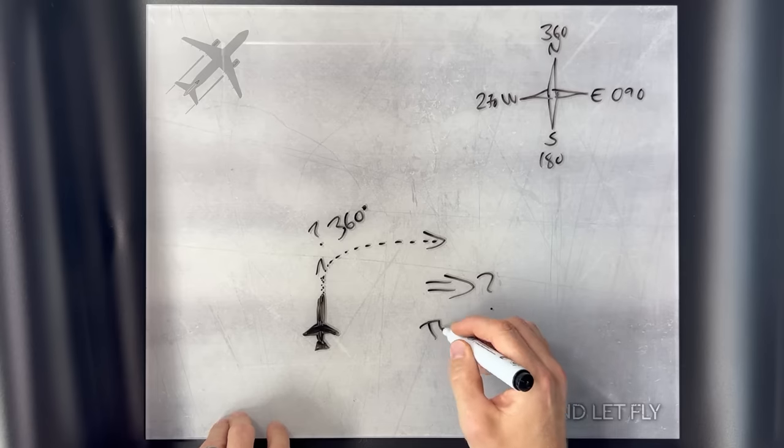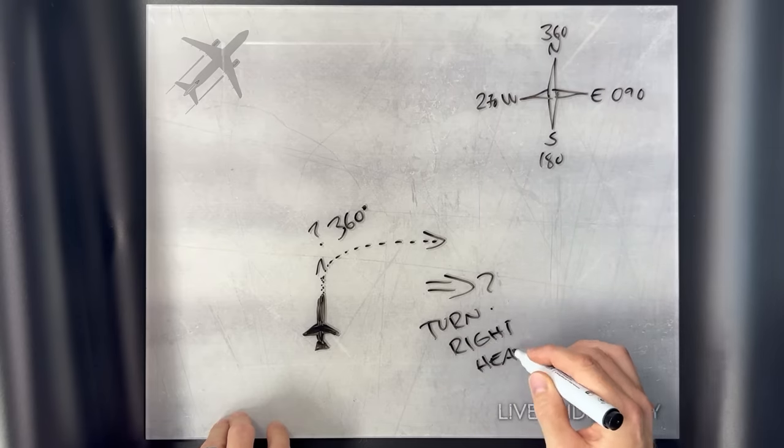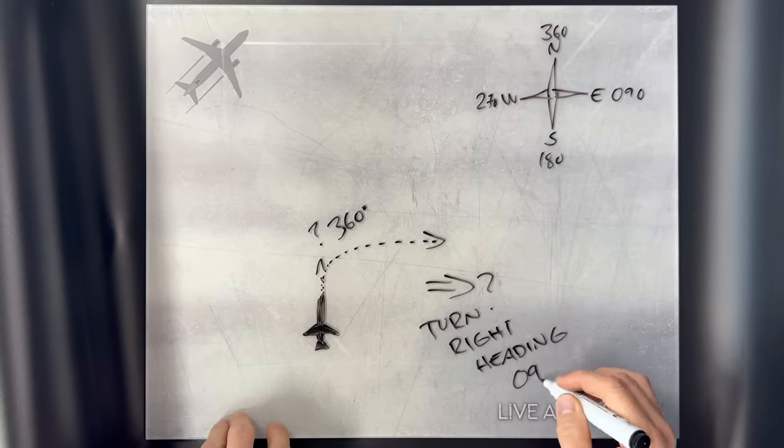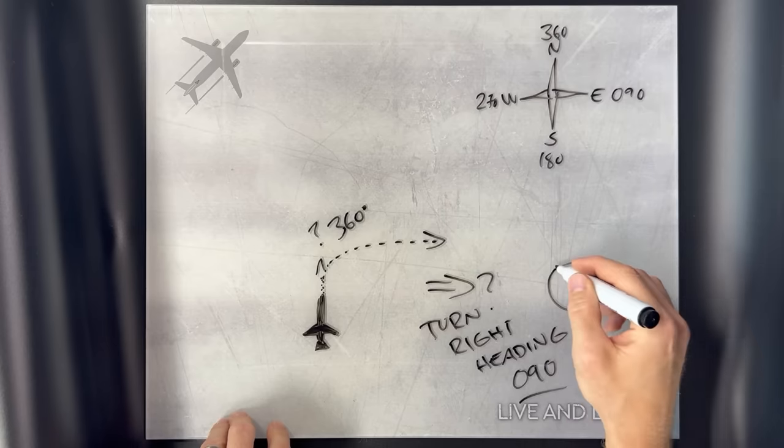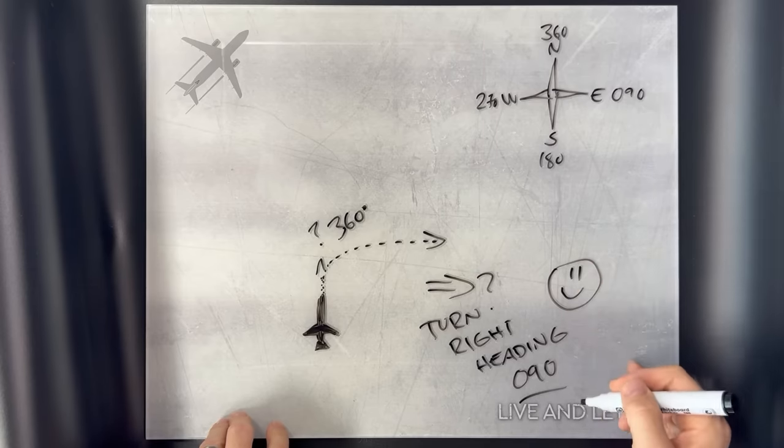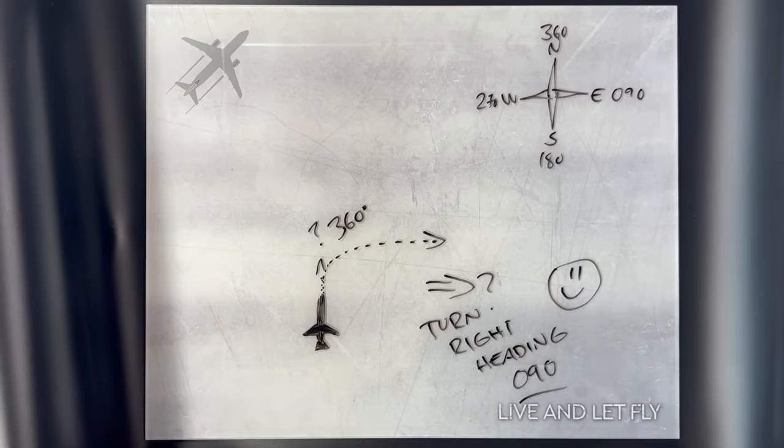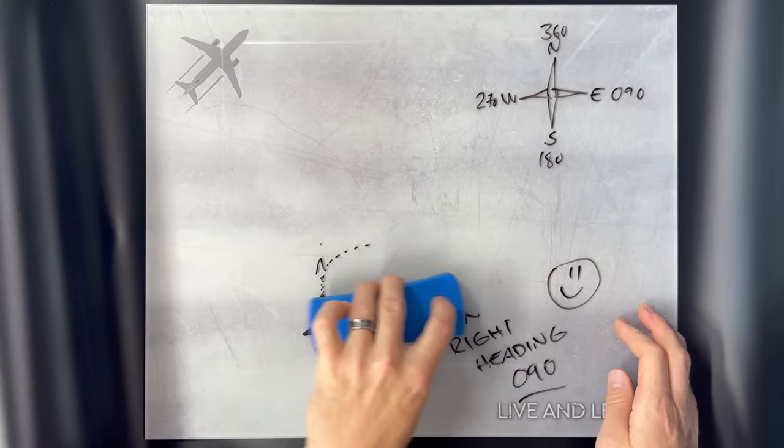If we want the aircraft to turn this way, it would be heading to 090. The controller would say, turn right heading 090. Using only the cardinal directions wouldn't be very precise and efficient, so we usually use any heading with increments of 5.